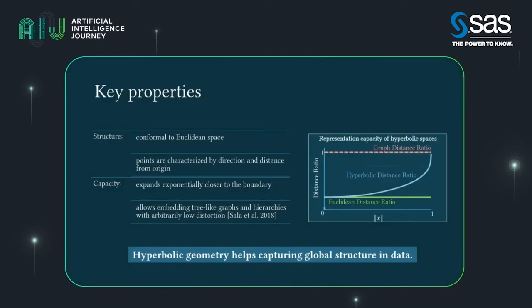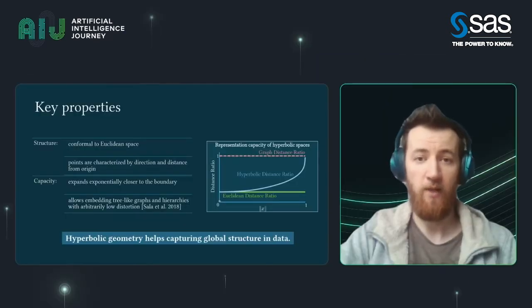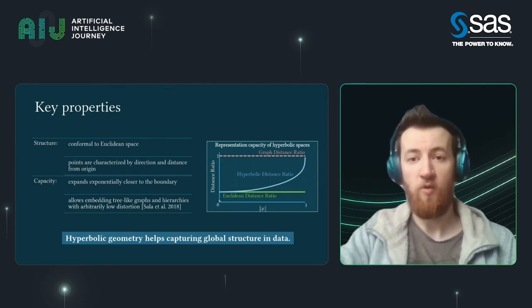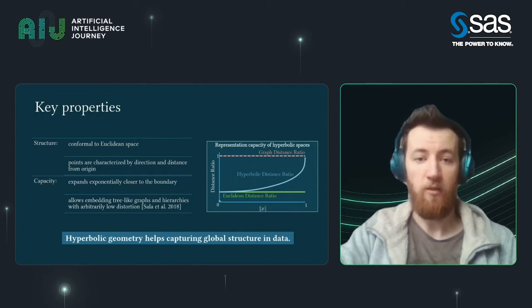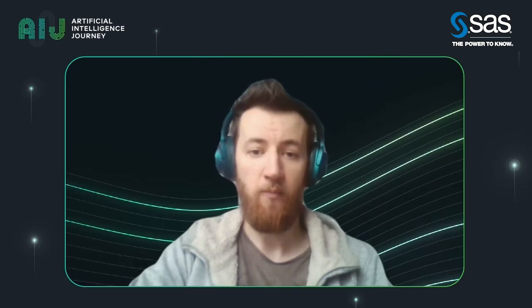This definition can also produce another range of useful qualities. First of all, we need the singularity of the space itself — the space is exponentially growing the closer it gets to the border. Thanks to this quality, we get another practical quality: we can embed almost any kind of tree-like structure or hierarchy. This is the most useful quality — you can say that it makes hyperbolic space useful for modeling the global structure of the data.